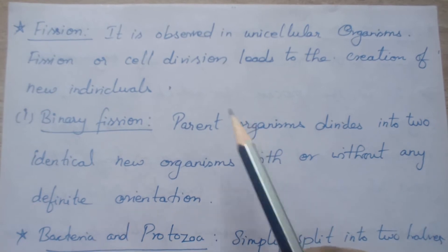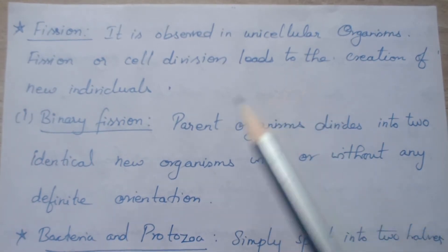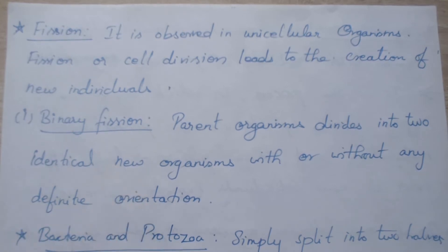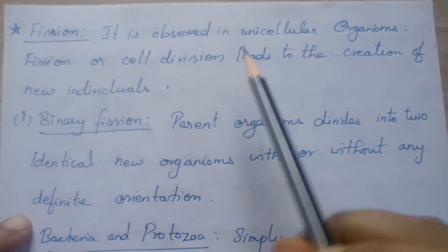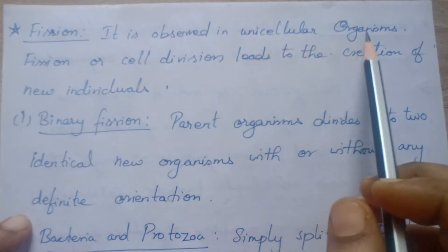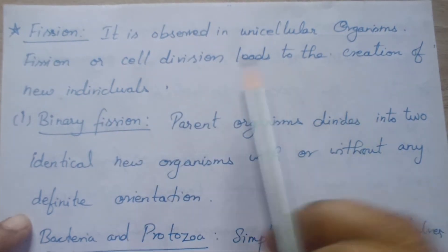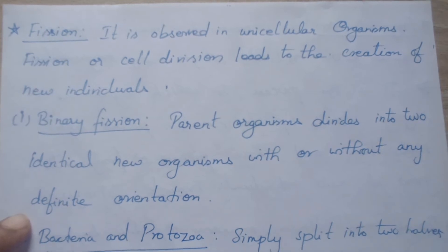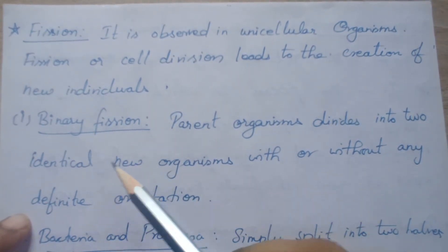Fission means one cell is divided into two cells. If it is divided into two cells, it is called binary fission. If it is divided into more cells, that is called multiple fission. This fission is observed in unicellular organisms. Fission or cell division leads to the creation of new individuals.